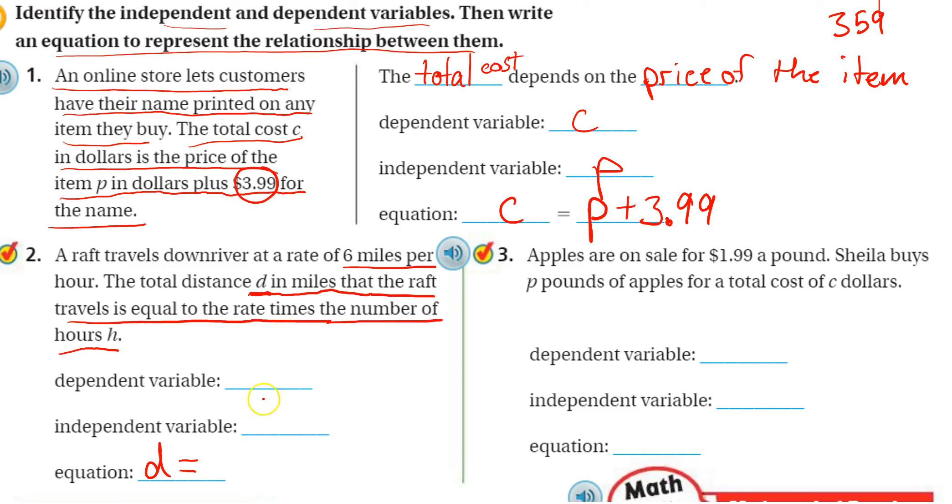And to find the distance, we need to take 6 miles per hour, so times every hour. Every hour, it's going to go another 6 miles. Well, now that I have my equation, it's very easy for me to see which is dependent and independent. The distance depends on how long we go.